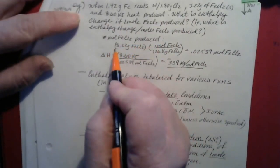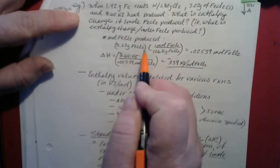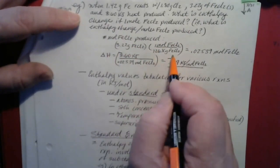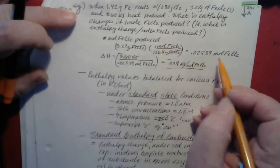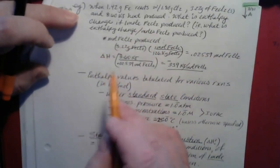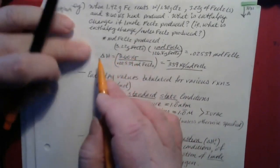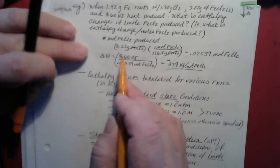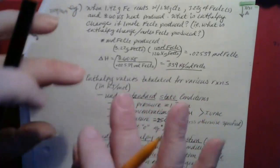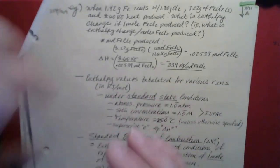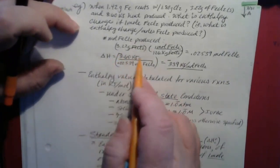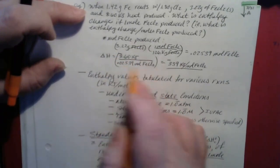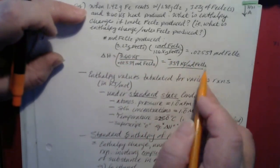The number of moles of FeCl2 produced would be 3.22 grams of FeCl2 divided by the molar mass of FeCl2, which is 126.8 grams per mole. The grams of FeCl2 cancel, and we end up with 0.02539 moles of FeCl2. Delta H in terms of kilojoules per mole will be the heat evolved — negative, because the reaction gives off heat, meaning the reactants are losing heat, so Q is negative and delta H is negative — divided by the number of moles. We end up with negative 339 kilojoules per mole of FeCl2.